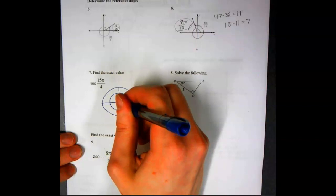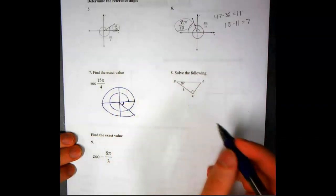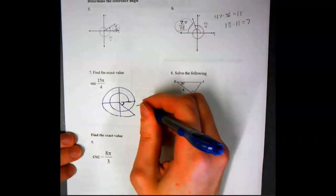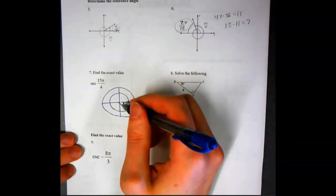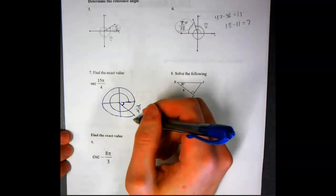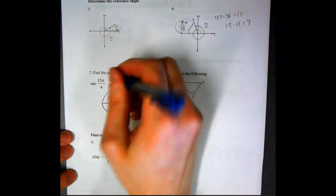We're looking at this angle right here. And that angle is pi over 4. We are down in the bottom right quadrant, and we're working with secant.